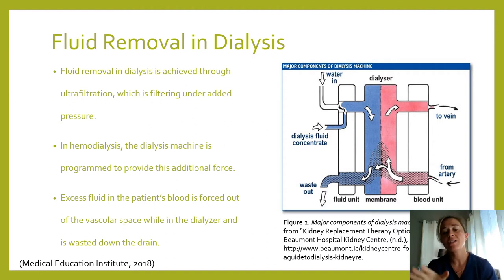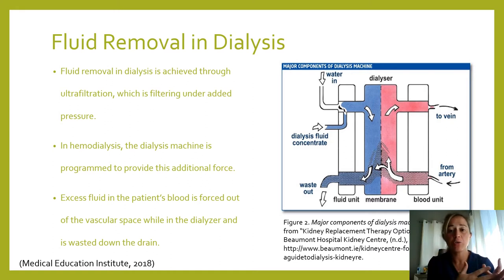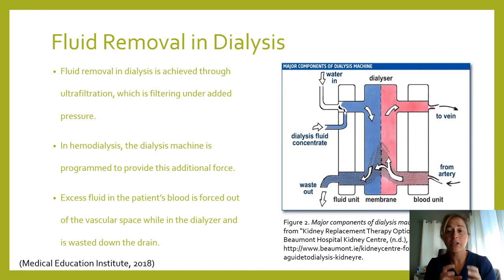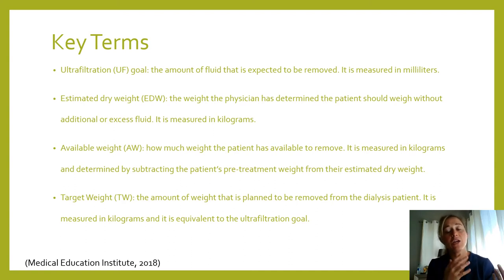Our job as dialysis personnel is to make sure we remove the appropriate amount of fluid in dialysis. The dialyzer serves as a semi-permeable membrane, allowing blood and dialysate to run side by side. We use force or pressure to push fluid from the patient's vascular space — from their plasma — into the dialysate compartment so it can go down the drain. It's very important that we remove the right amount, and that's what we're going to talk about today. The ultrafiltration, or UF goal, is how much fluid we're going to remove from the patient.